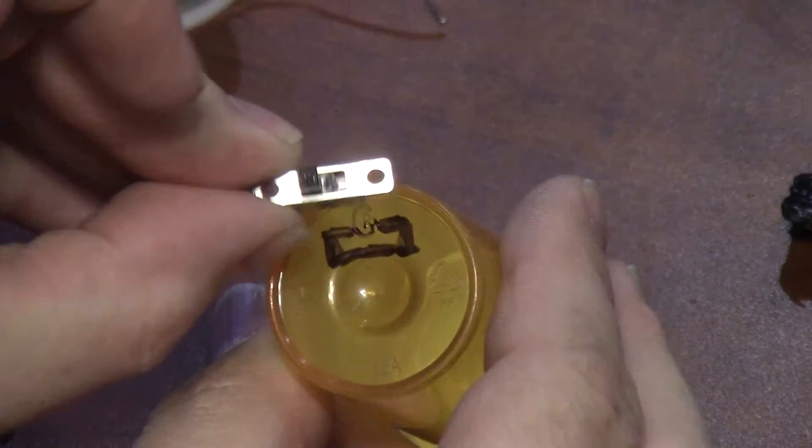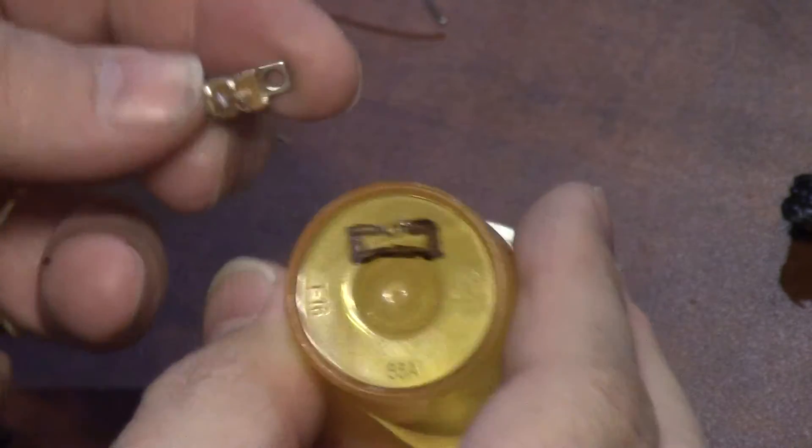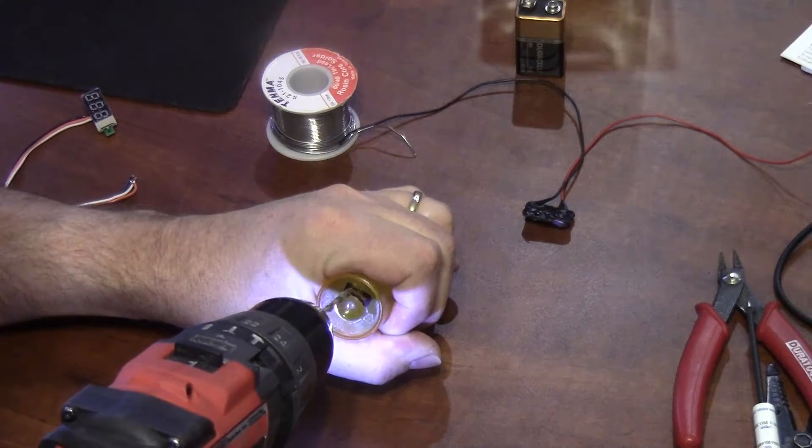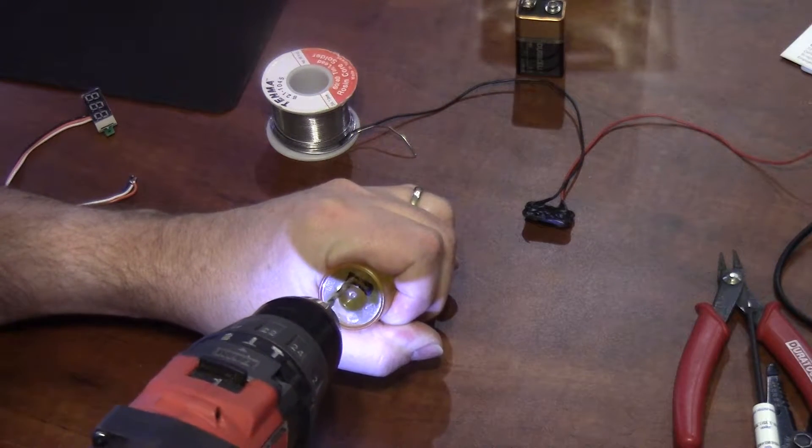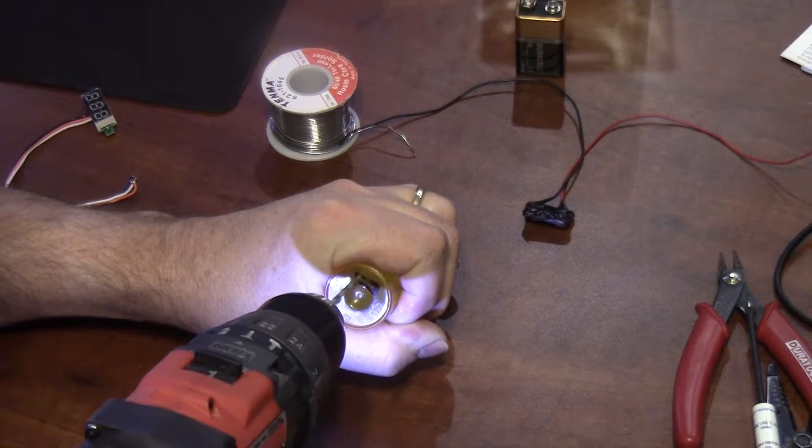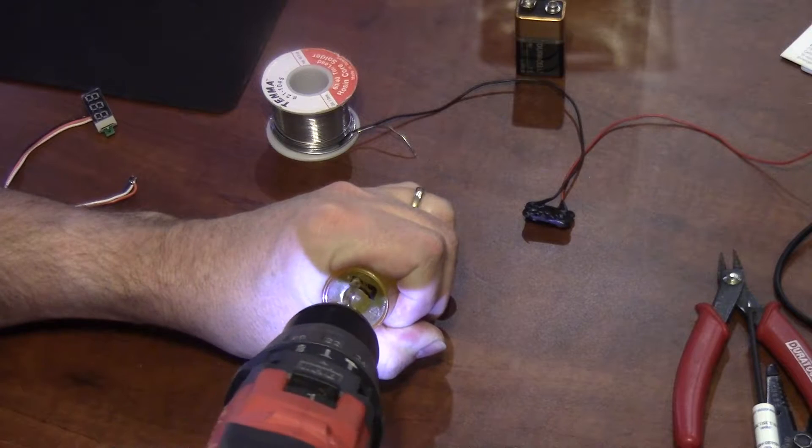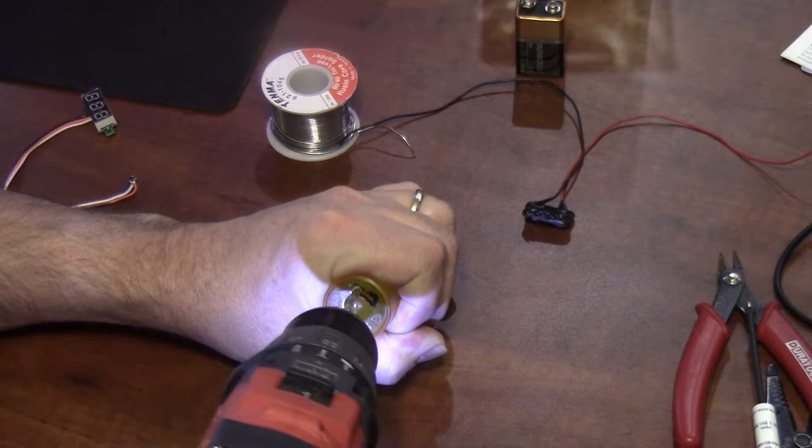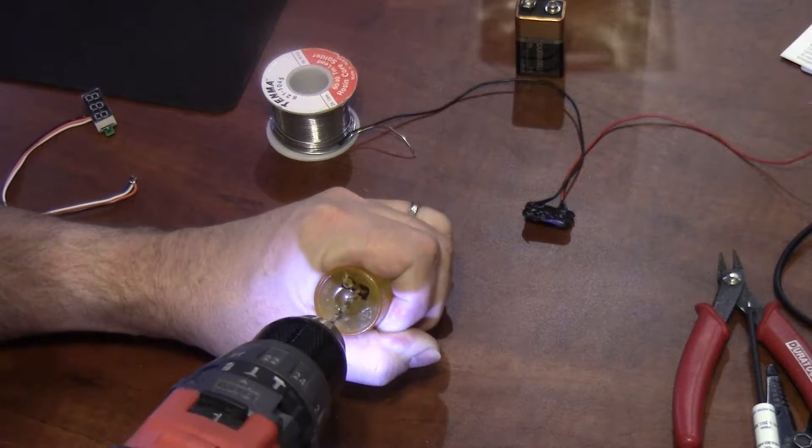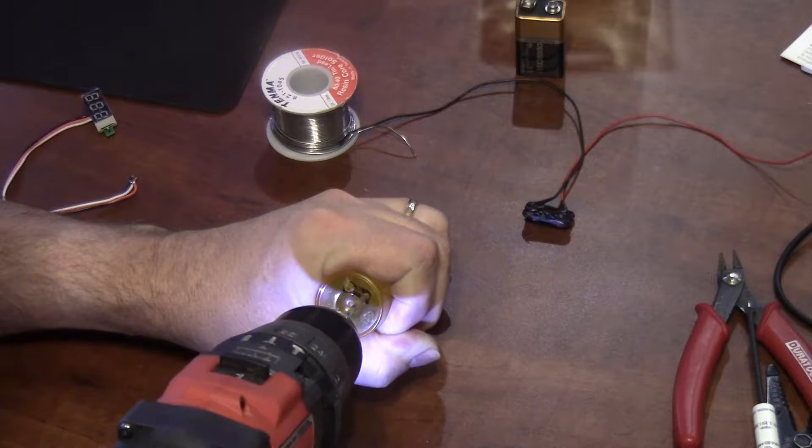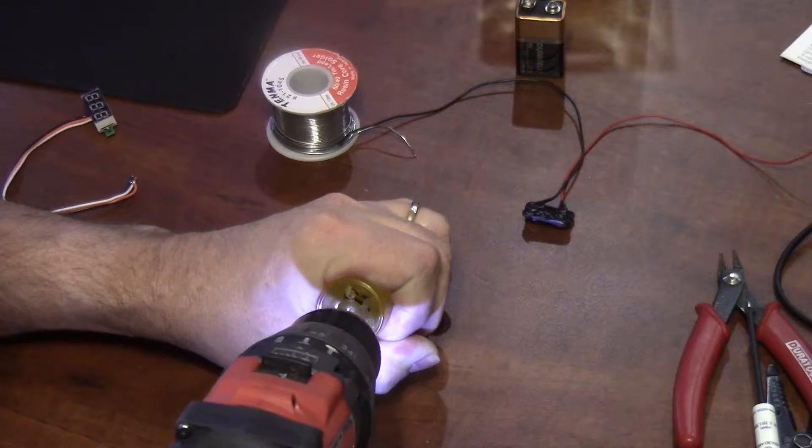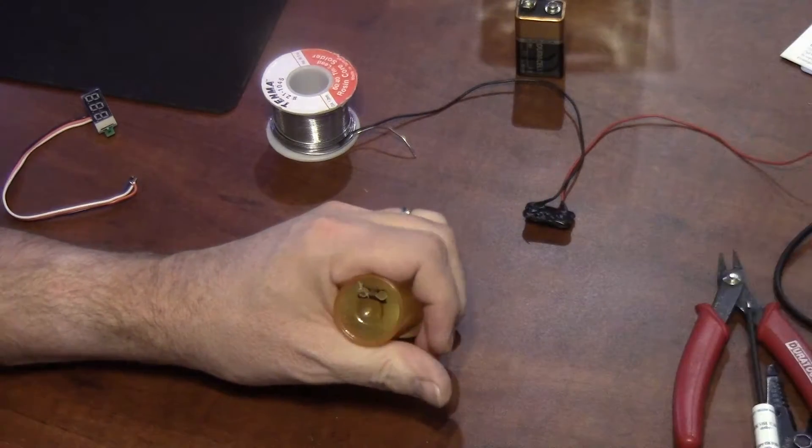In the bottom of the pill bottle for the power switch, I'm just going to drill a couple holes in each side. The drill bits are a little bit dull so it takes me a little bit of time here, but I eventually get the two holes drilled into it.